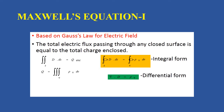Maxwell's Equation 1 can be written in integral form and differential form. This equation is based on Gauss' law for electric field. According to Gauss' law, the total electric flux passing through any closed surface is equal to the total charge enclosed. So, the surface integral of D dot dS is equal to total charge enclosed. Volume charge density is denoted by rho_v, where rho_v equals charge divided by volume, so charge equals rho_v times volume. Therefore, the surface integral of D dot dS equals the volume integral of rho_v dV. This is the integral form of Maxwell's Equation 1.